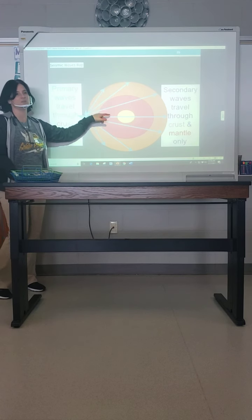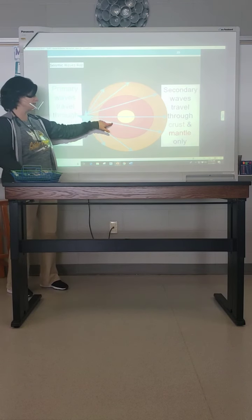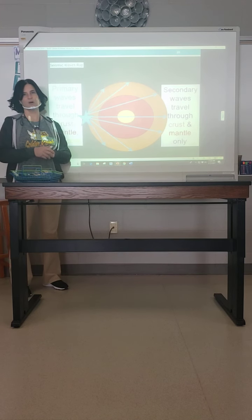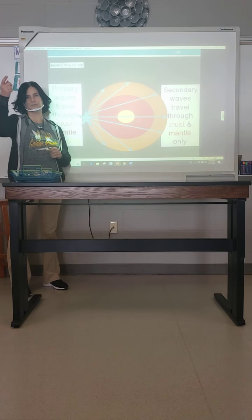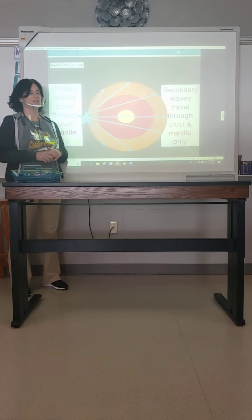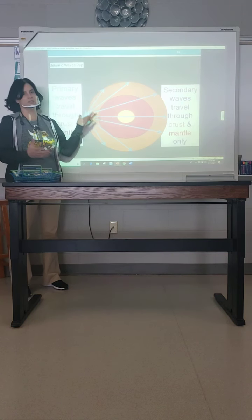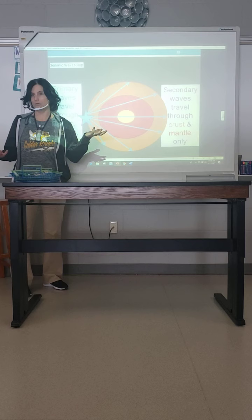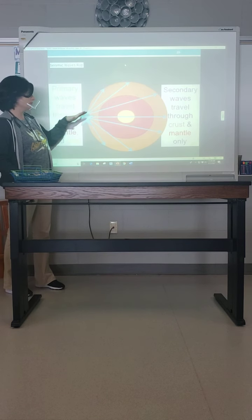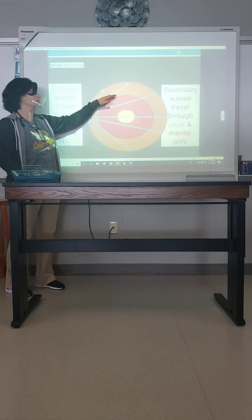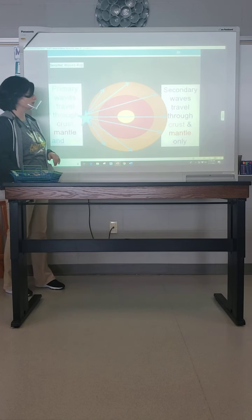Now look at this — this is way off. This is the outer core. What's wrong with it? That red is way too big, and the orange — the mantle — is way too little because of that. But nonetheless, it can go through the mantle, it can go through the outer core, and it can go through the inner core. So it's able to go through all.